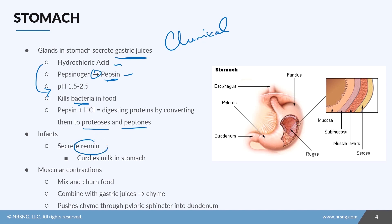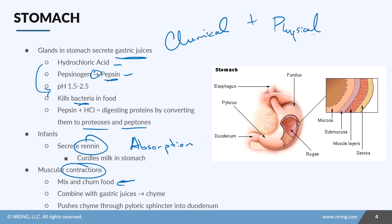In infants, there's an enzyme called rennin that helps to curdle the milk in the stomach, which improves absorption and makes the effect longer lasting, so babies feel more satiated. Muscular contractions in the stomach help to mix and churn food. This combination of chemical and physical churning creates a bolus of food called chyme. Once the chyme is formed, it moves into the small intestine by contracting through the pyloric sphincter.